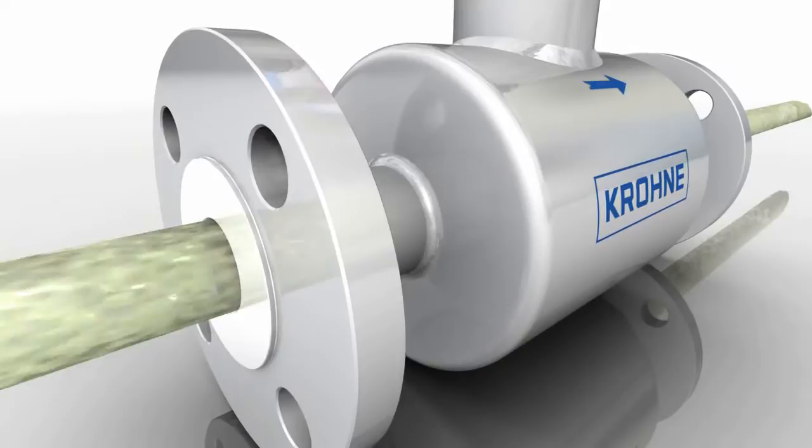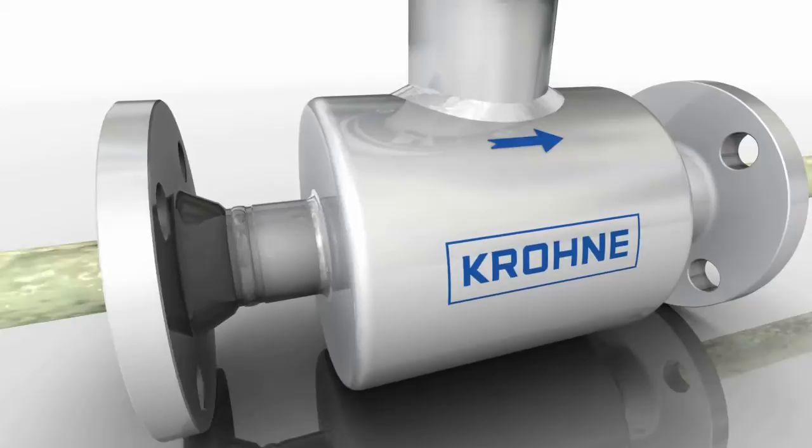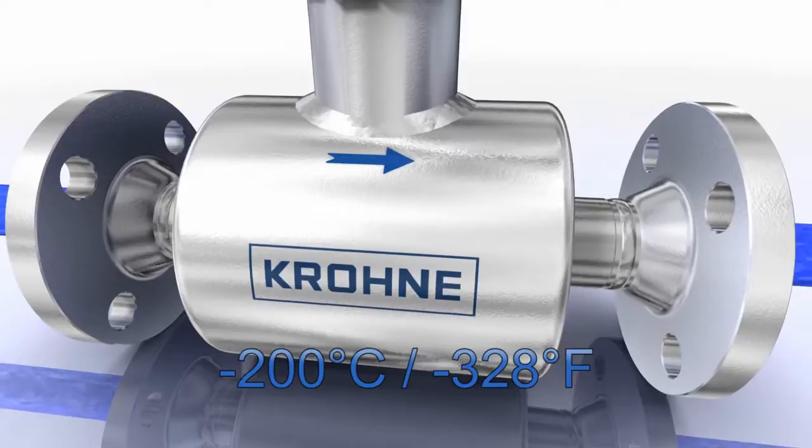The meter is available in a wide range of compact and remote variants. For cryogenic temperatures as low as minus 200 degrees centigrade, for products such as liquefied natural gas, nitrogen or oxygen.